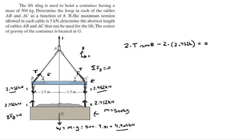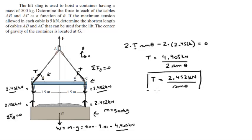So they're asking us to find the force in each of the cables, in other words, the tension T, as a function of theta. So all you have to do is solve for T. So this goes to the other side as positive 4.905 kilonewtons. 2 times 2.452 is 4.905, divided by 2 sine of theta. So T is equal to 2.452 k over sine of theta. That would be kilonewtons. This is a function for the tension on the cables as a function of theta.